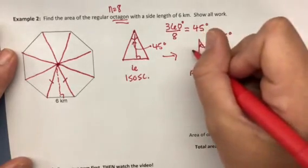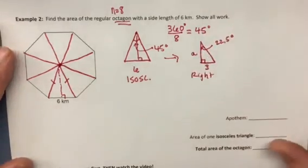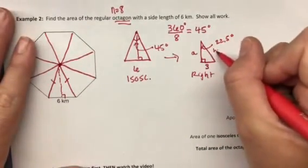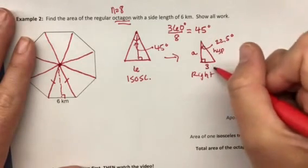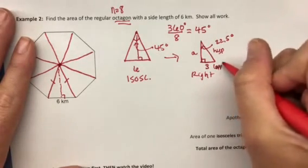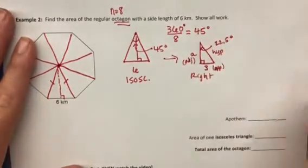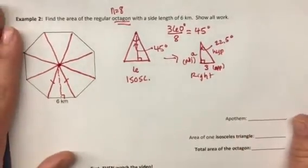We're looking for the apothem. And again, if you look at this, this is our hypotenuse over here. From this angle, this is our opposite side. And the apothem is our adjacent side. So again, I'm going to use tangent.